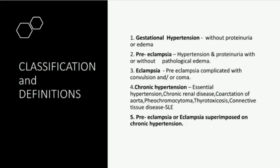Then comes chronic hypertension — either essential hypertension or chronic renal disease like renal vascular diseases, coarctation of the aorta, pheochromocytoma, thyrotoxicosis, and connective tissue disorders especially SLE or systemic lupus erythematosus. Lastly comes preeclampsia or eclampsia superimposed on chronic hypertension.